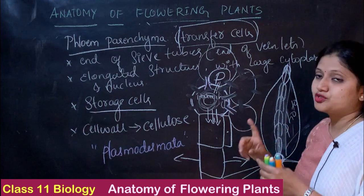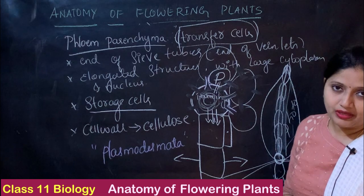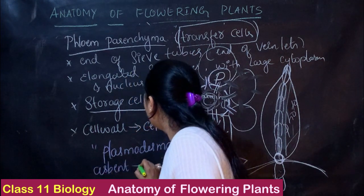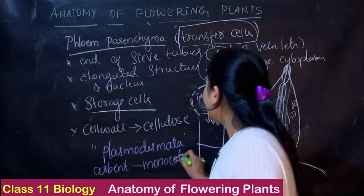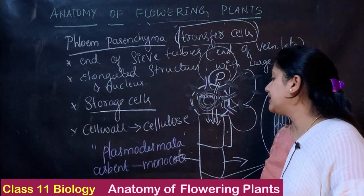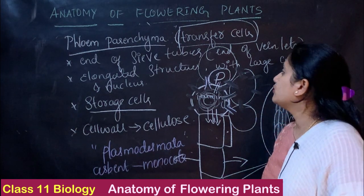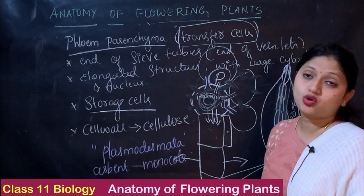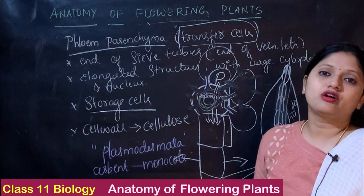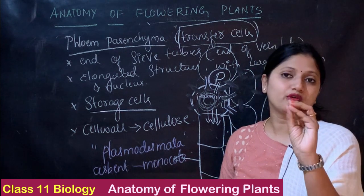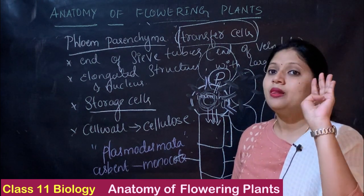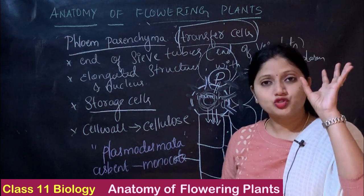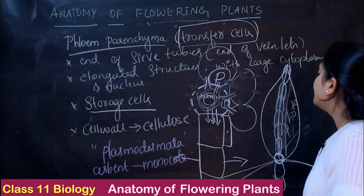Phloem parenchyma are usually absent in monocots. The functions of phloem parenchyma are: food conduction as a general function, acting as a transfer cell, and acting as a storage cell. If asked specifically about its functions, you must mention food storage and transfer cell, as well as food conducting.